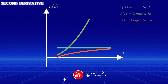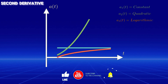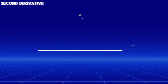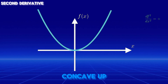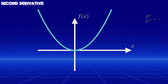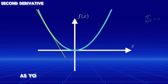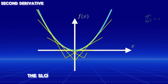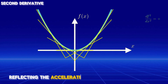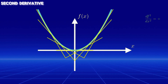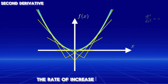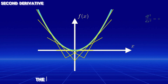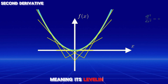The second derivative also reveals information about the function itself, not just its derivative. Specifically, it determines the concavity of a graph. A function with a positive second derivative is concave-up, meaning the graph bends upwards like a U-shape. As you move from left to right, where the function increases, the slope of the tangent lines increases, reflecting accelerating growth. In other words, if the function is increasing, the rate of increase accelerates — growing faster — and if the function is decreasing, the rate of decrease slows down, meaning it's leveling off.